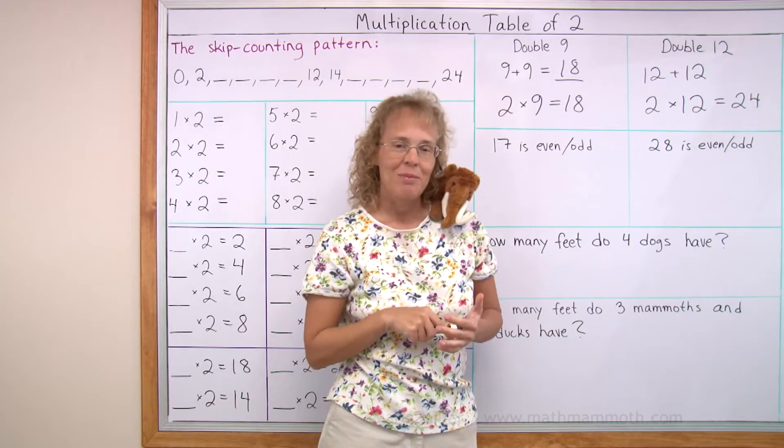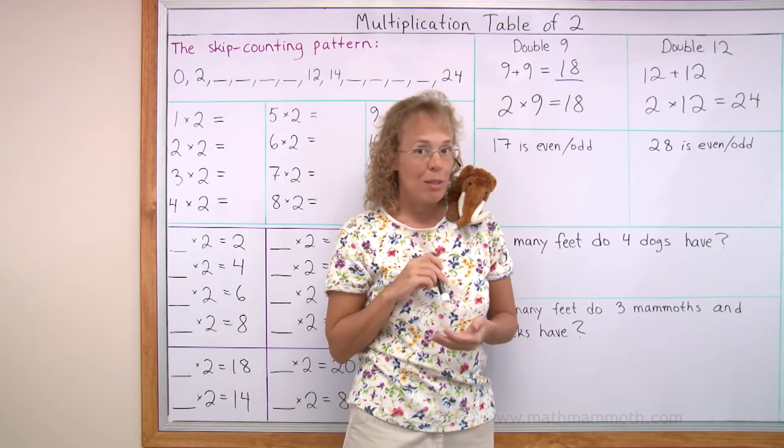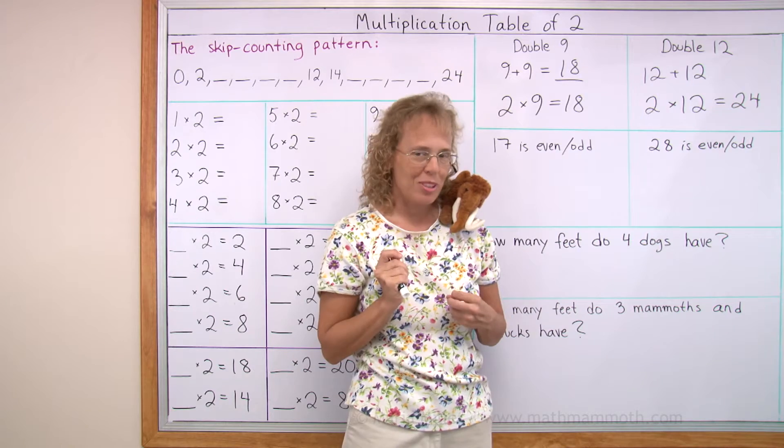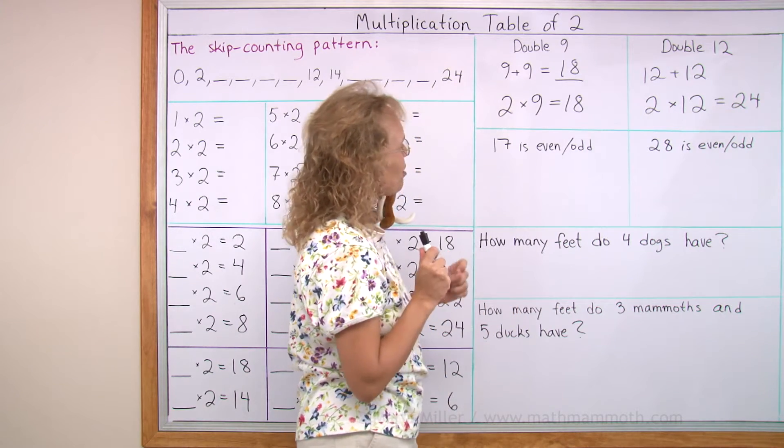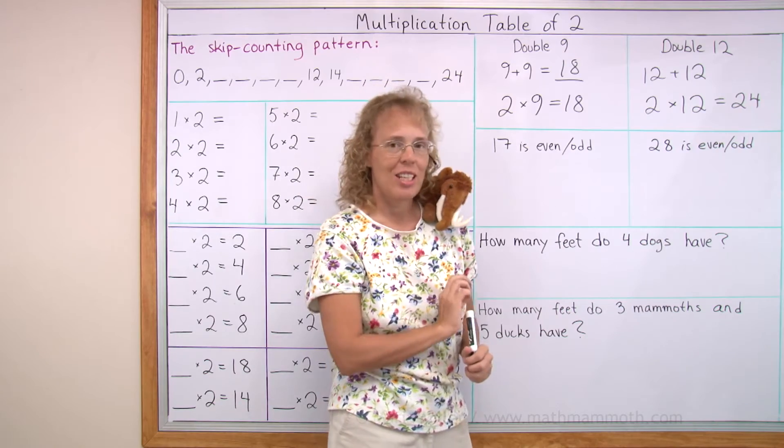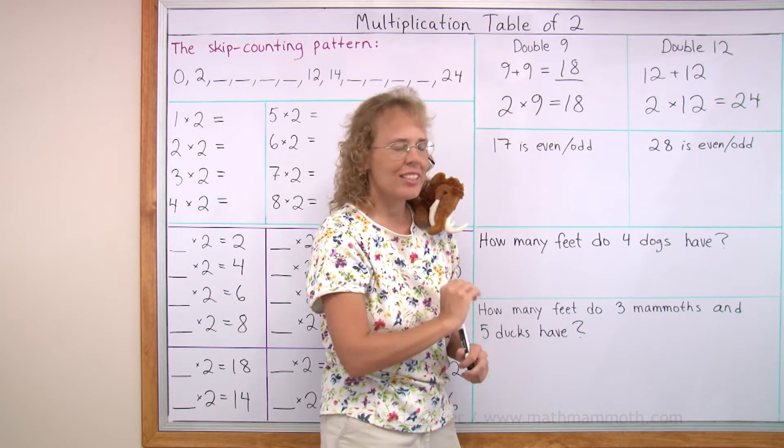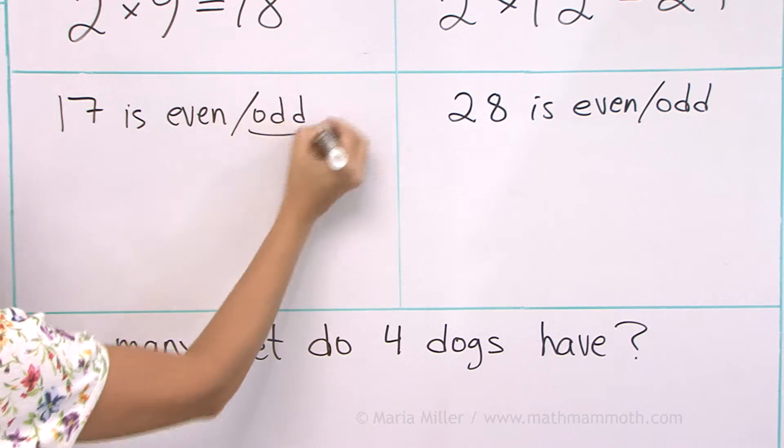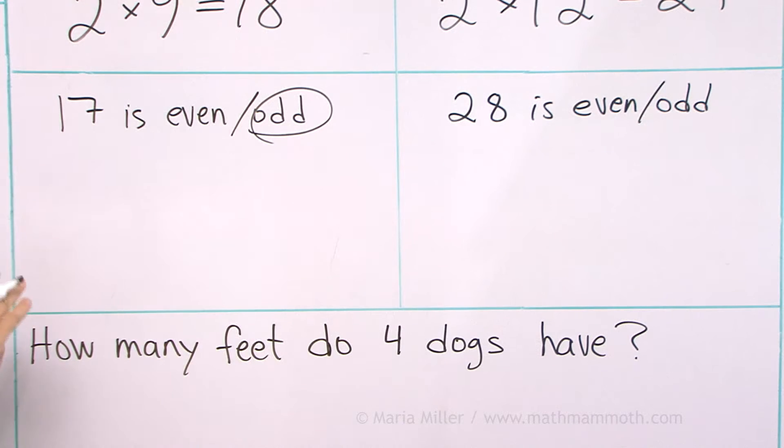And then you probably noticed that the table of two has all those even numbers in it, right? So let's review that too. Is 17 an even or odd number? It's not in the table of two in the skip counting list. So it's an odd number, and I cannot write two times something equals 17.